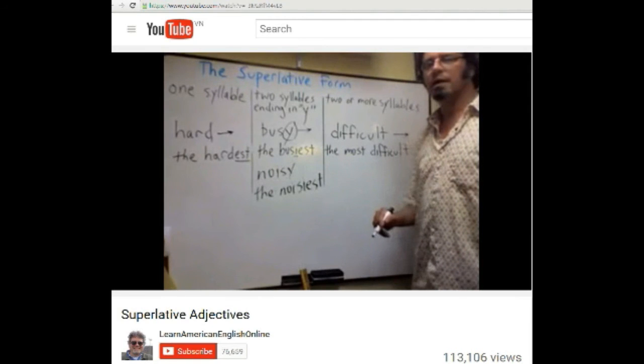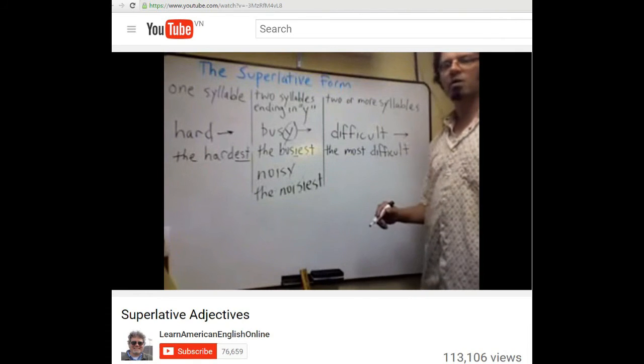Đối với những tính từ có hai âm tiết và chữ cái cuối cùng là chữ y dài thì khi đổi sang dạng so sánh nhất thì chúng ta sẽ đổi cái y dài đó thành y ngắn và thêm est và chúng ta cũng thêm vờ vào trước tính từ. And for long words,